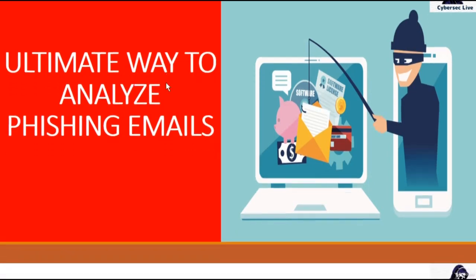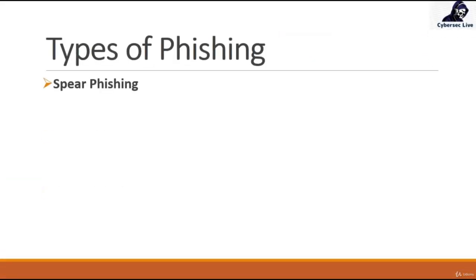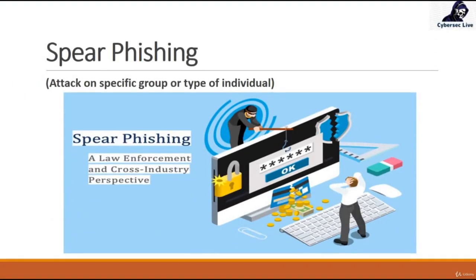In the previous video we discussed phishing and its types: spear phishing, whaling, smishing, and email phishing. So let's discuss each one by one. Spear phishing is targeted and personalized to a specific individual, group, or organization. Regular phishing emails use a broad approach that involves sending bulk emails to massive lists of unsuspecting contacts.